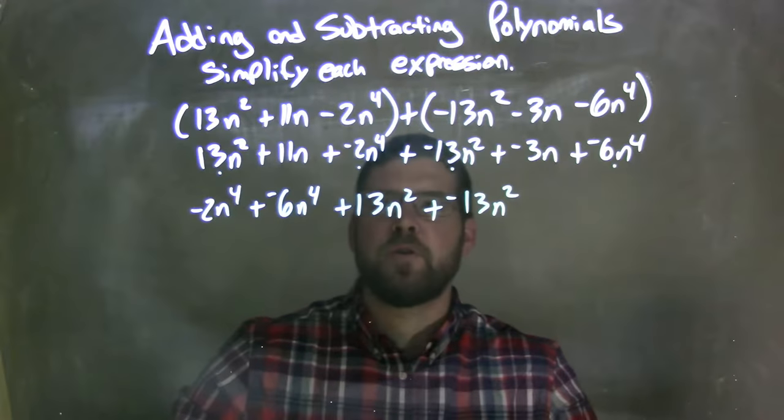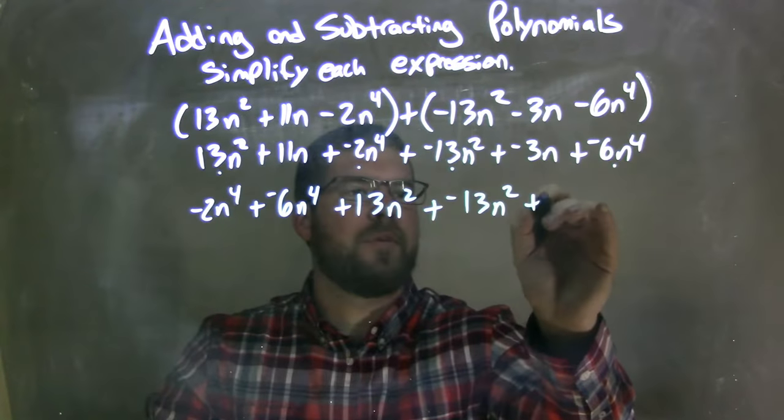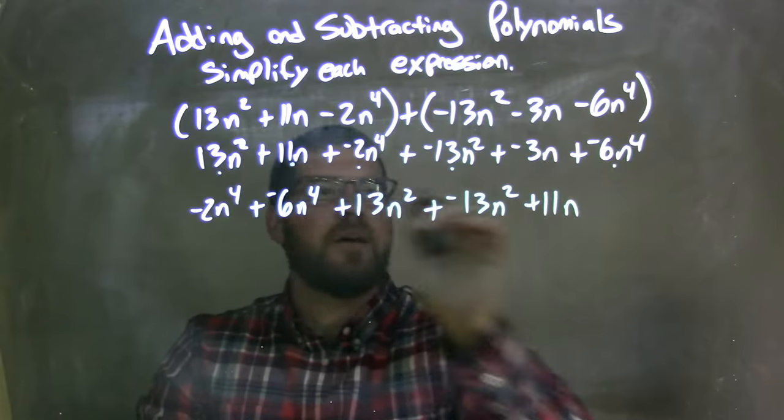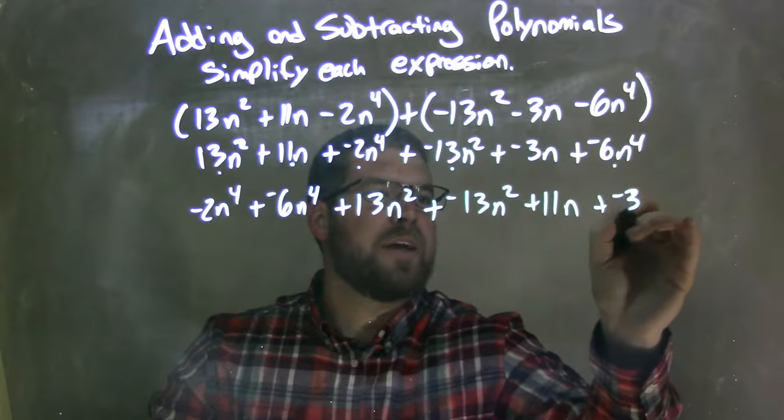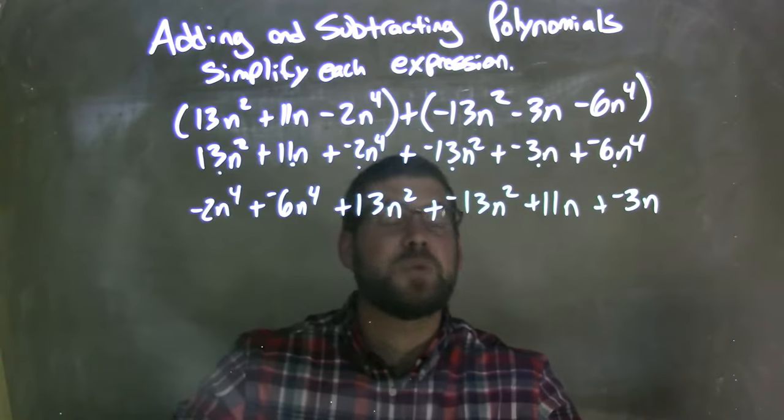So now we just have a variable n to the first power. I see 11n, so I have plus 11n right there, and then plus a negative 3n right there. And that should be it.